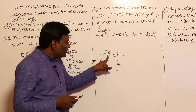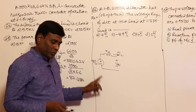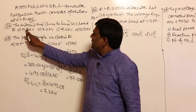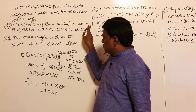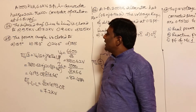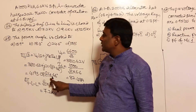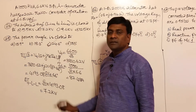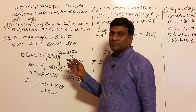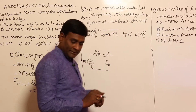So the induced voltage line-to-line is approximately 7.2 kV, and the power angle is approximately 24.66 degrees — about 24.6 degrees. That is four marks easily.